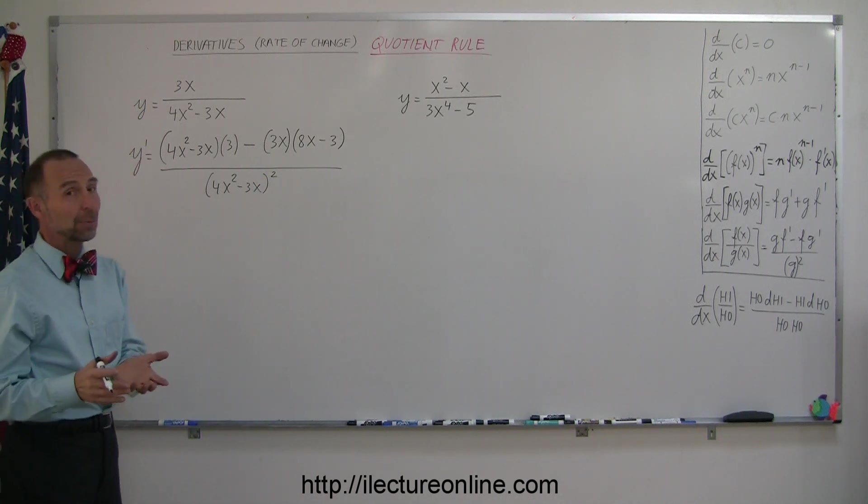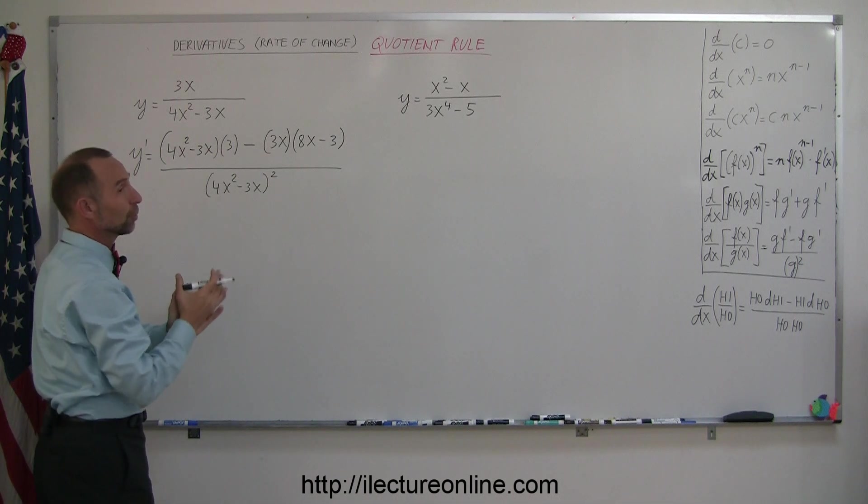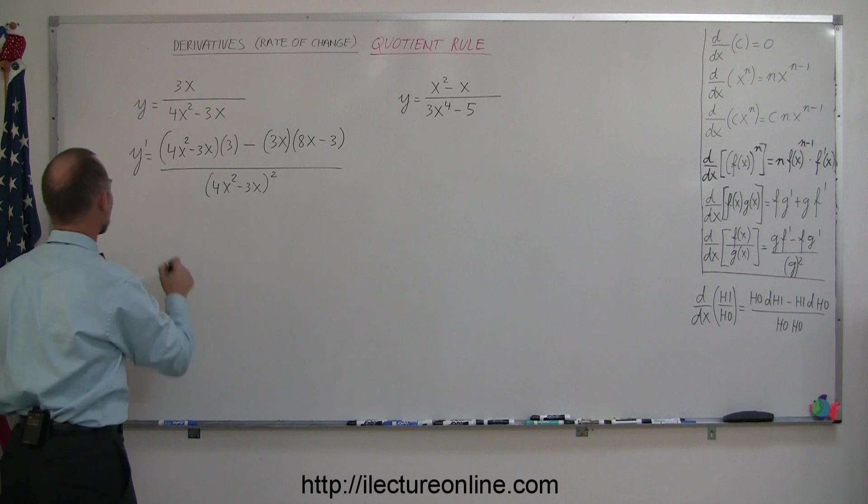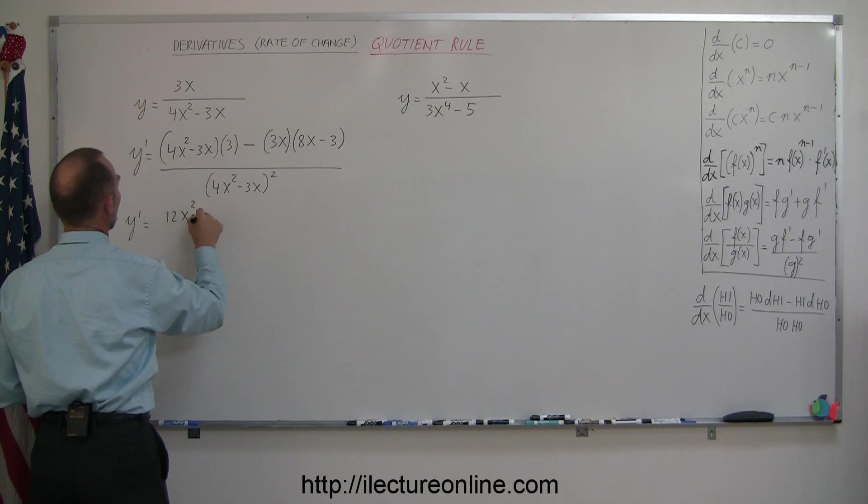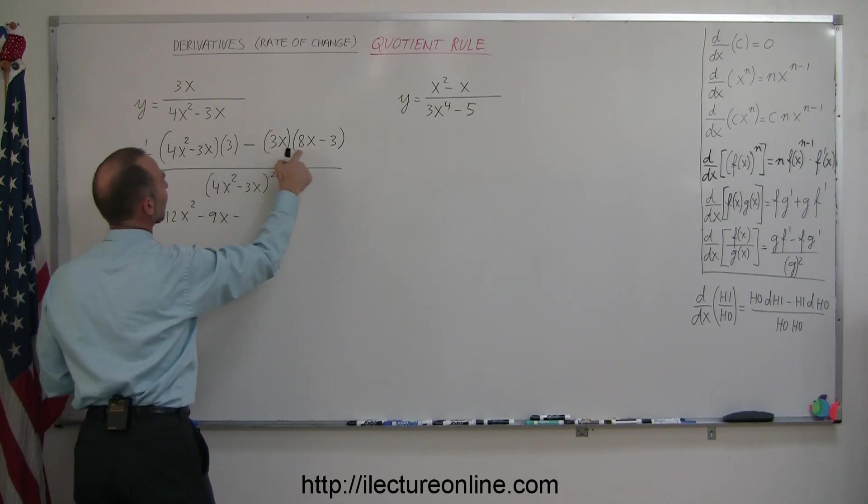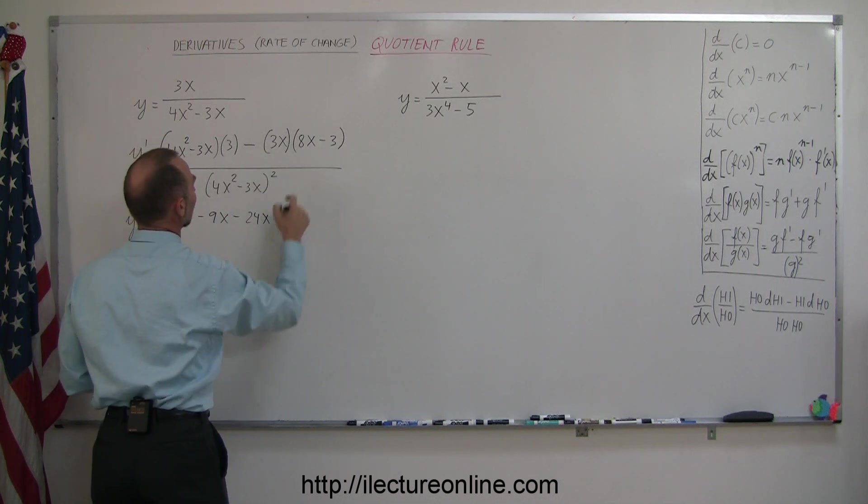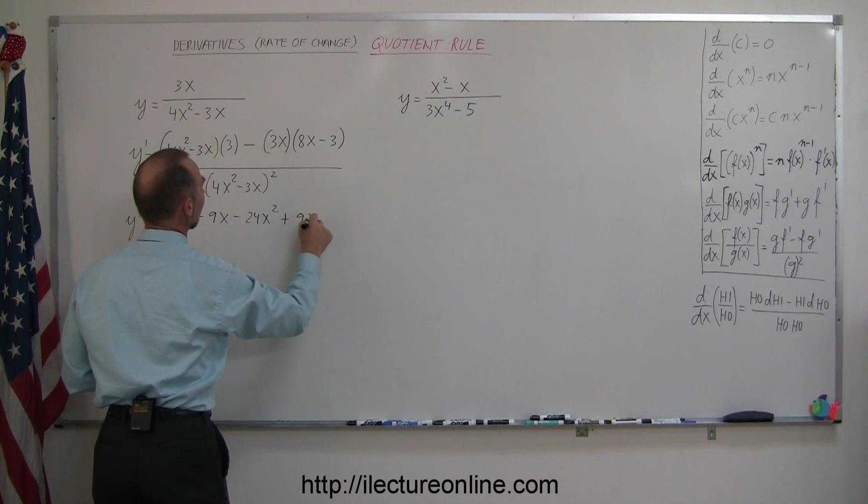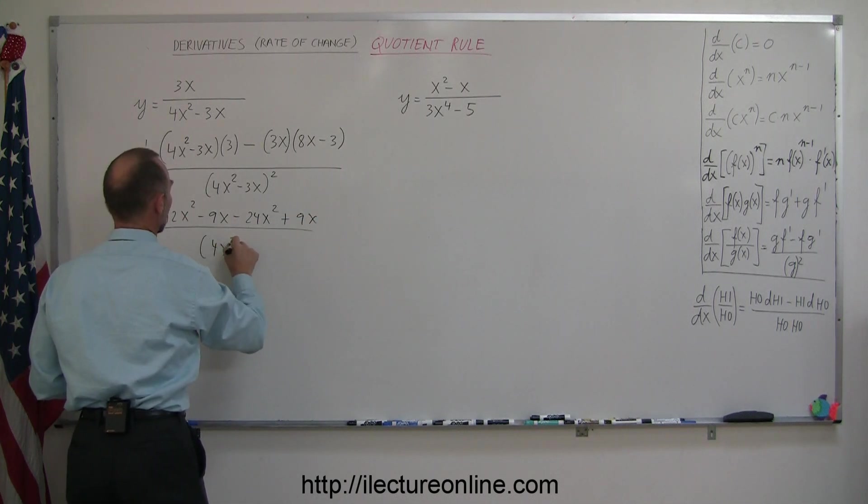Typically what we like to do is multiply these out and collect common terms. So y' equals, we multiply this through: 12x² - 9x, and that would be minus 3x times 8x which is 24x², and minus 3x times -3 is plus 9x, all divided by (4x²)² squared.